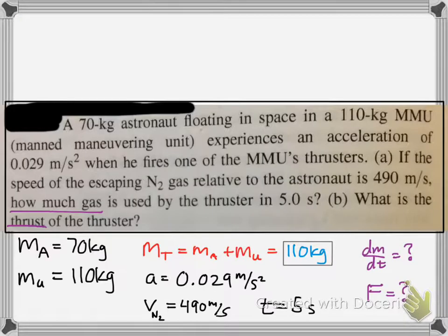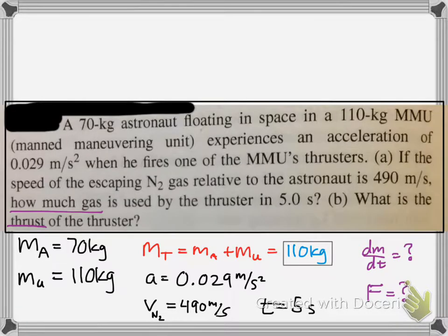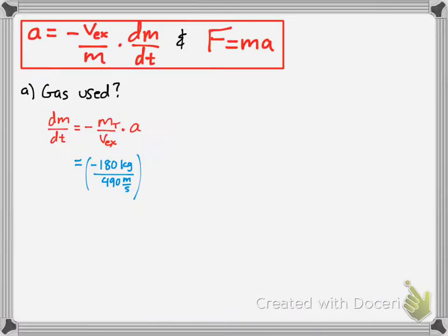Plug in the information. We have the total mass of the entire system, because the rocket and the maneuvering unit are moving together as one as it's accelerating. So, you have that mass. And, how fast is the nitrogen gas escaping? Well, that's at 490 meters per second. So, you plug that in, and we said it was accelerating at 0.029 meters per second squared.